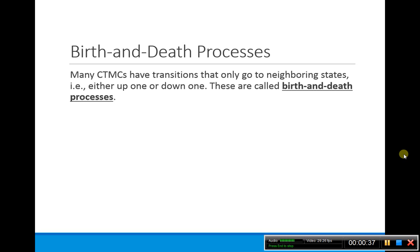In general, any continuous time Markov chain that has the requirement that you can only go up by one or down by one state is called a birth and death process. For instance, if you're in state five you can only go down to four or up to six, but you can't go from five to seven.